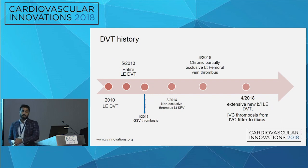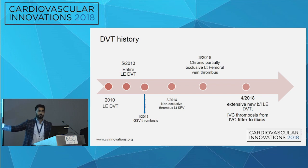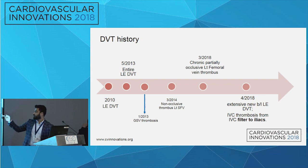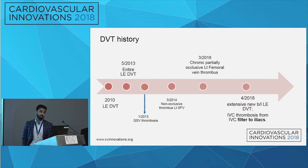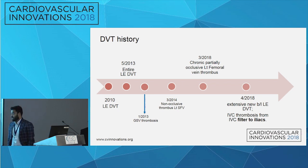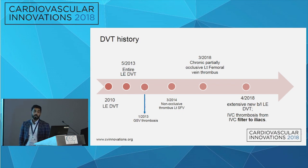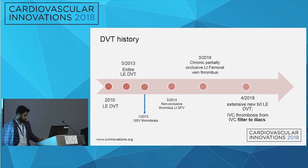Regarding his DVT history — going all the way back to 2010, he had his first episode of a lower extremity DVT. Then taking eight years forward, he was diagnosed with new extensive bilateral DVTs — that was his initial presentation at the outside hospital. When he got to us, a duplex ultrasound showed thrombosis of his IVC from the filter all the way down to the bilateral iliacs.